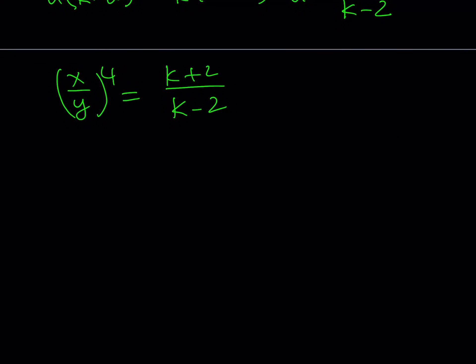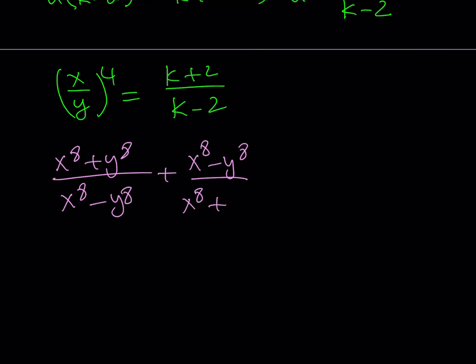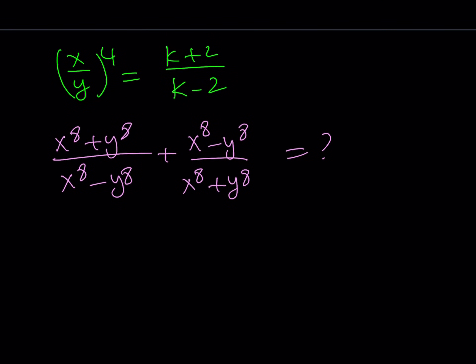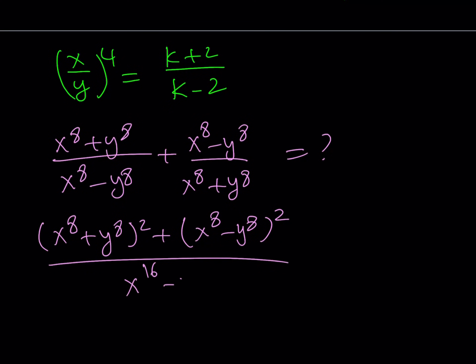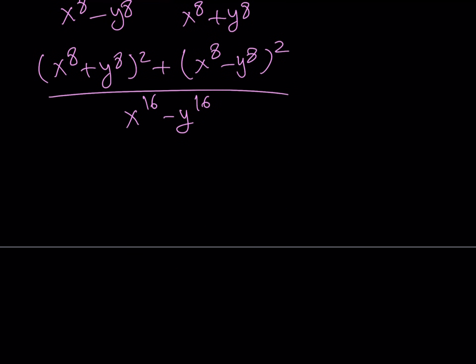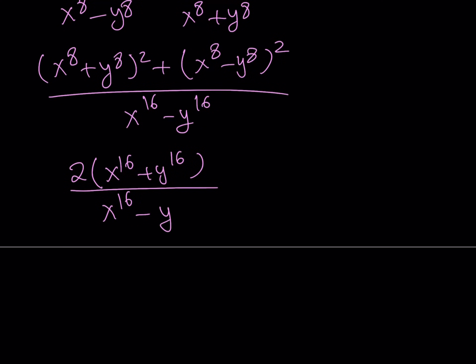Now let's go back to the expression we need to evaluate: x⁸ + y⁸ divided by x⁸ - y⁸, plus its reciprocal — the same structure but flipped — expressed in terms of k. Following the same method, we make a common denominator, which gives us (x⁸ + y⁸)² + (x⁸ - y⁸)², divided by x¹⁶ - y¹⁶. Using the same identity, that gives us 2(x¹⁶ + y¹⁶) divided by x¹⁶ - y¹⁶.